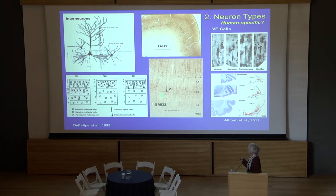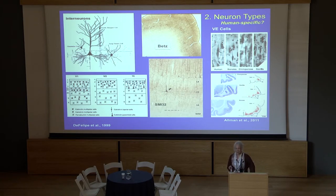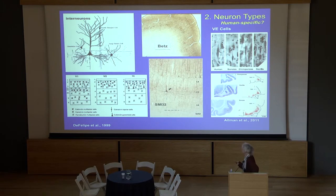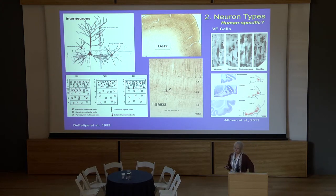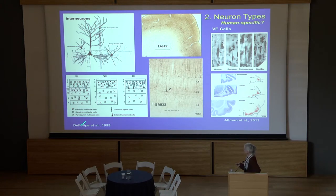Betz cells are prominent in primates, in humans, but also in non-human primates. What you do see, however, is differences in arrangement. Javier in particular has done some very nice work showing differences — this is in the cat, but he also has human V1, V2, and TE — differences in the proportions of different calcium-binding proteins in neurons.